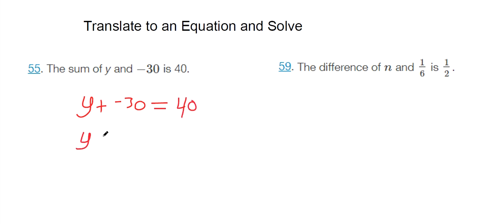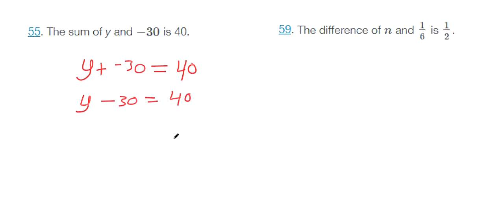To solve this equation, plus a negative you could change that to just subtraction. Those mean the same thing. We want to add 30 to both sides. So you get y is 70.